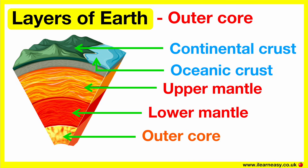The outer core. The outer core is the layer which surrounds the inner core. It's about 2,200 kilometers thick. The outer core is made up of very hot liquid iron and nickel. These are both metals. This layer is also extremely hot.